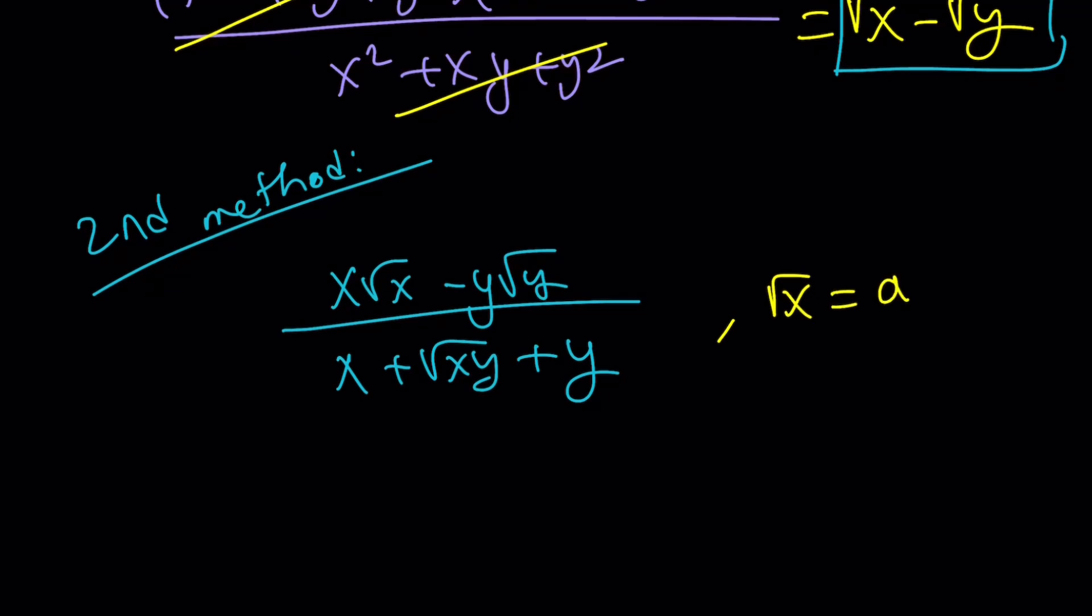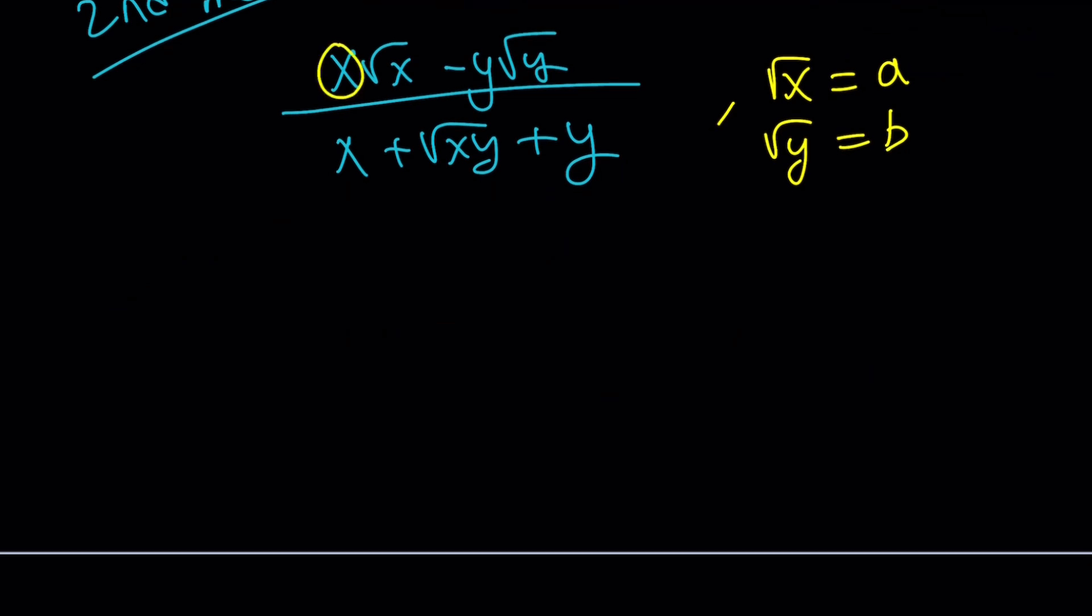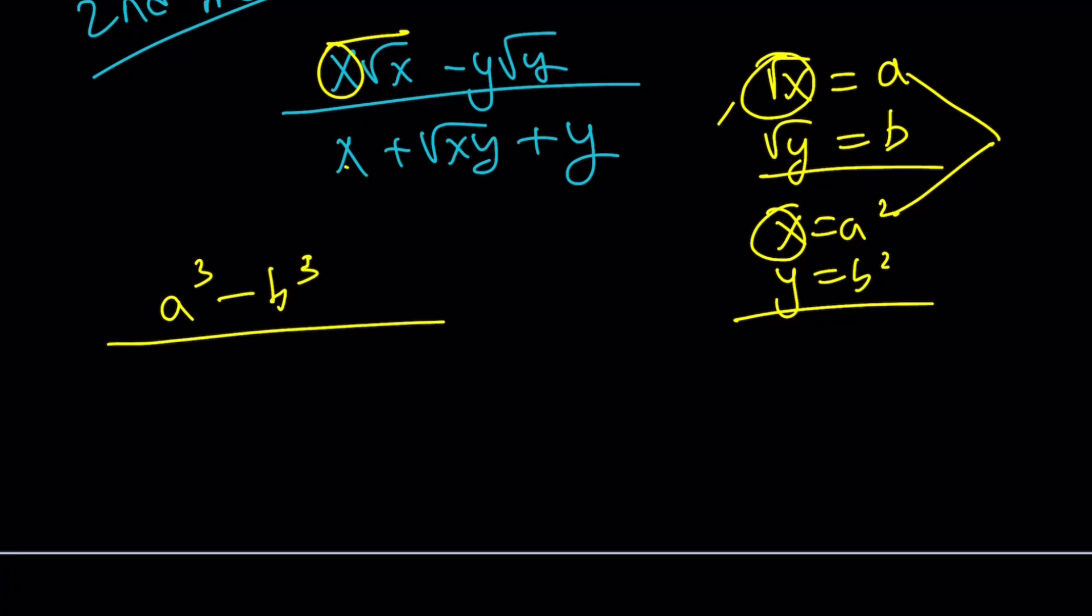Let's call square root of x as a and square root of y as b, so we can get rid of all the radicals. This becomes a squared because from here we get x equals a squared and y equals b squared. If you multiply these two together, you get a cubed. So this is a cubed minus b cubed divided by a squared plus ab plus b squared.